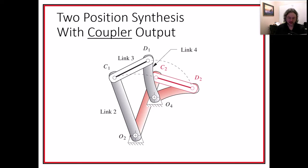With class 4 in ME401/501, we're going to do two position synthesis with coupler output. This is going to be the same position synthesis that we did for rocker output, but this time we're going to make it so that the coupler is the thing that lands between these two positions. So let's check that out.